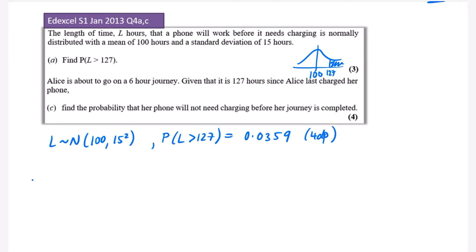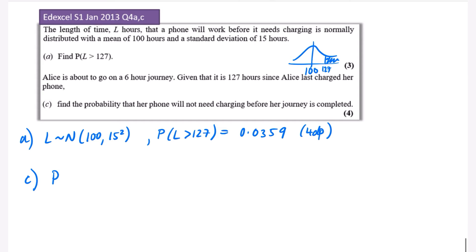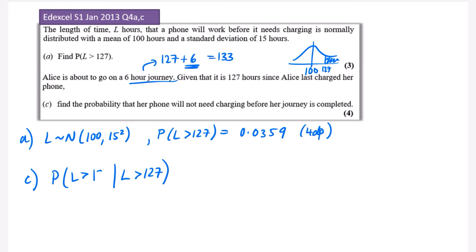Let's translate this into a conditional probability. Note that part b is unrelated, which is why we jump from a to c. Given that the phone has not been charged for 127 hours, this means: given that L is already greater than 127. We want to find the probability it lasts six hours extra. Since it's already lasted 127 hours and needs six more, that takes us to 133. So we want: probability that L is greater than 133 given that L is already greater than 127.